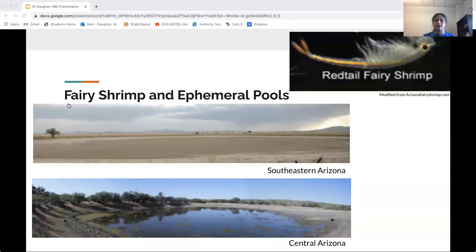Branchiopods are a class of crustaceans which includes fairy shrimp. The branchiopods used in this experiment are found in ephemeral pools, temporary freshwater habitats which undergo periods where they are completely desiccated. These pictures show two of the Arizona desert sites where the soil we used to grow the animals was collected from. The top picture shows a completely dried out pool while the bottom picture shows a pool after a rain.